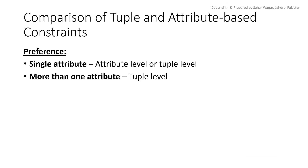In summary, if a constraint involves one attribute then it is considered an attribute level constraint, and if it involves more than one attribute it is considered a tuple level constraint. A tuple level constraint is fired when any value in the tuple changes, while an attribute level constraint fires only when its specific attribute changes.